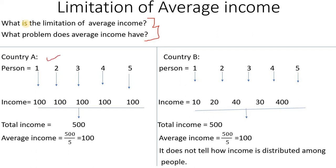Let's look at Country A. In Country A, every person gets a salary. Each person gets a salary of 100 rupees. If you divide the total income by the total number of persons, you get 100 rupees.